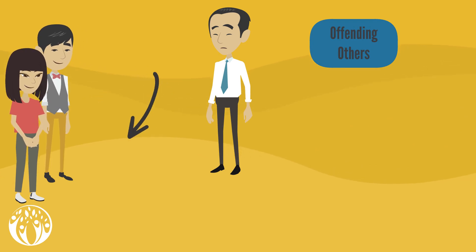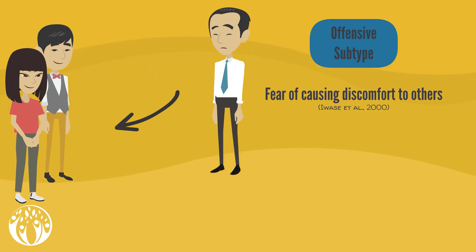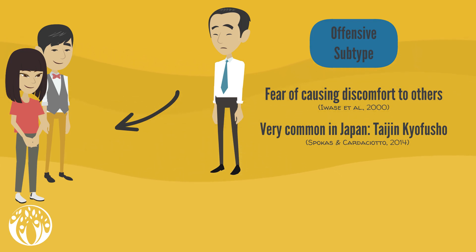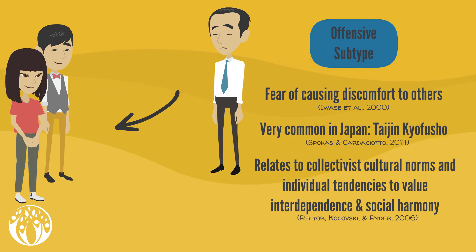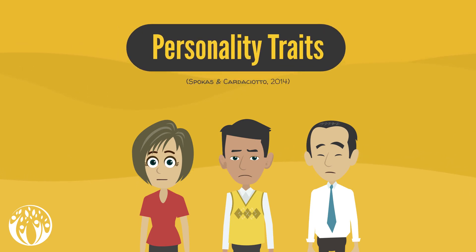Another subgroup tends to have their fear focused on offending other people and can therefore be described as the offensive subtype. They are mainly concerned with the fear of causing discomfort to others. This subtype is predominantly found in Japan, where the phenomenon has its own name: taijin kyofusho. These concerns are thought to relate to collectivist cultural norms and individual tendencies to value interdependence and social harmony, but in western culture these fears seem to be frequent as well.